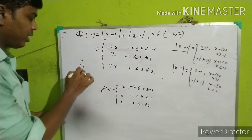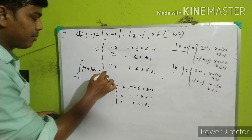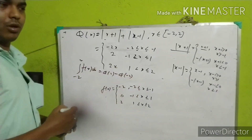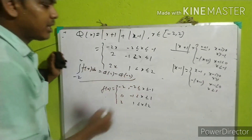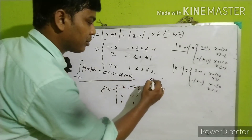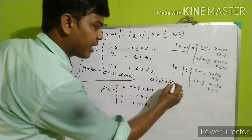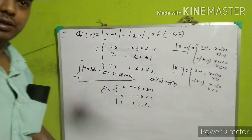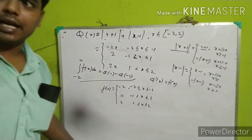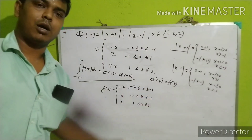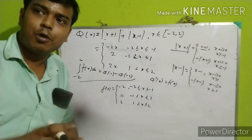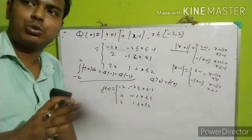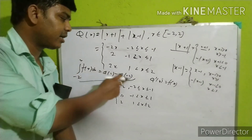Now we compute the integral from minus 2 to 2 of f of x dx. We need to check phi at each breaking point, so we will evaluate to determine if it is enough to proceed.